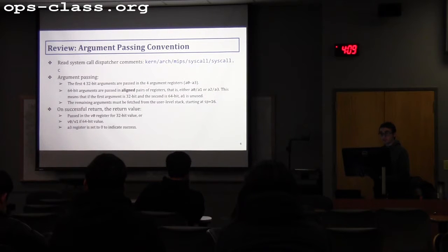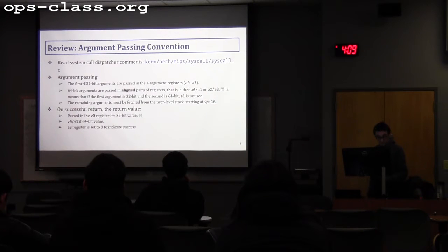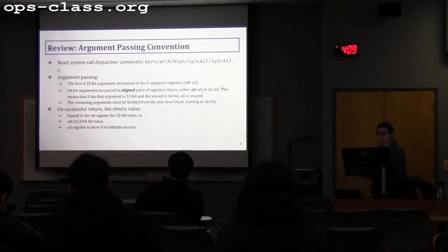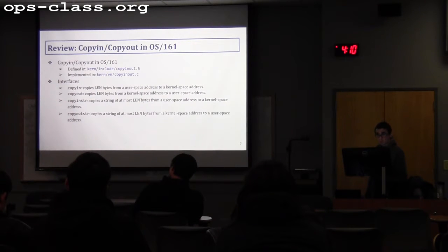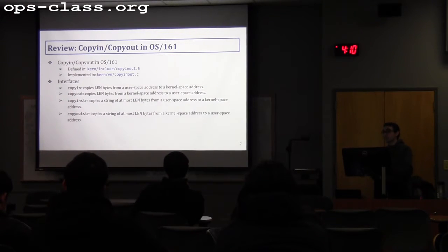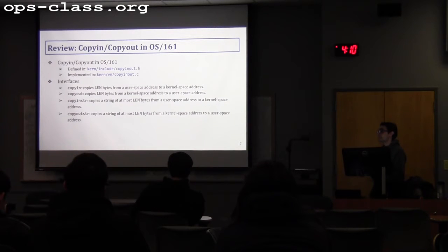If arguments are 64-bit, they should be placed aligned — so in A0/A1 or A1/A2, but not A1/A2 if A0 is taken; they cannot be in A1 alone. The same goes for return values: a 32-bit value goes in V0, a 64-bit value goes in V0 and V1, and A3 holds zero to indicate success. We also mentioned the copy-in and copy-out functionality, which you need to use whenever a user pointer is passed to kernel space, to detect violations such as null or unauthorized memory locations.